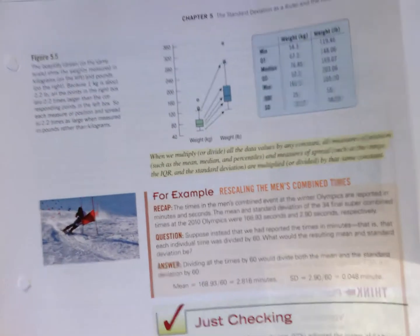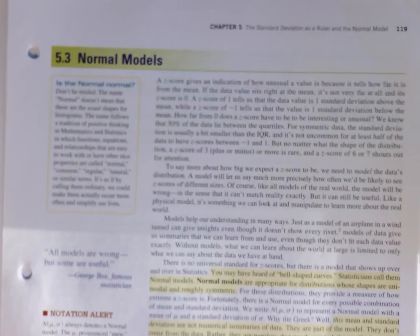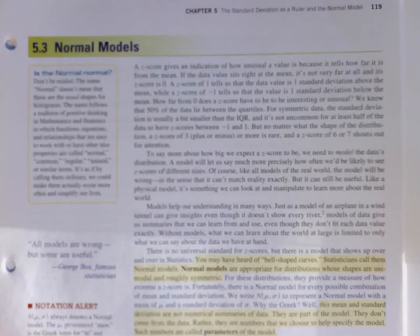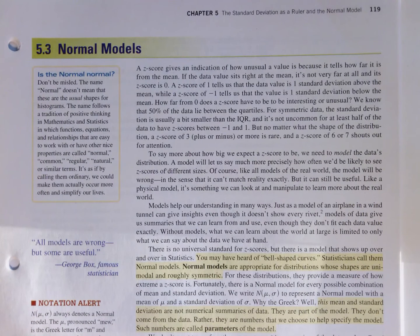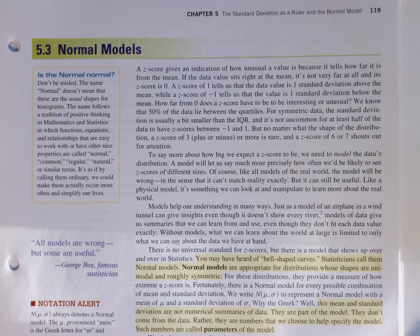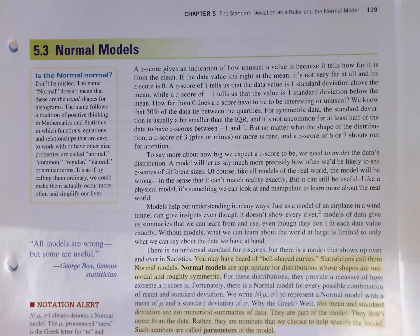The comparison and linkage here with z-scores can be very helpful, which really leads up to the idea of normal models. Normal models or Gaussian models are appropriate for distributions whose shapes are unimodal, roughly symmetric.